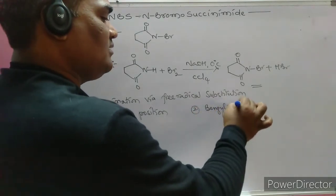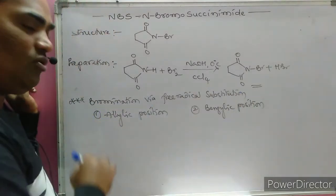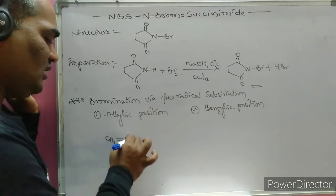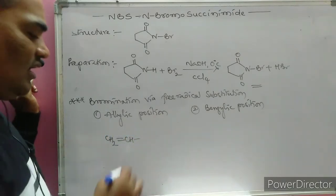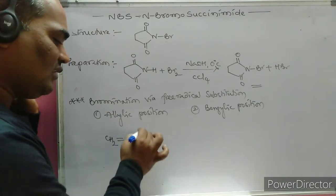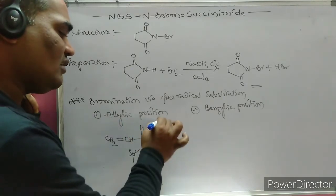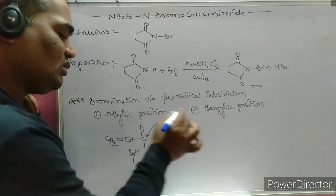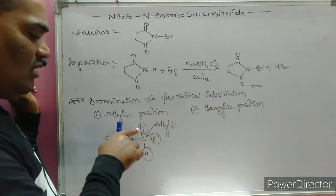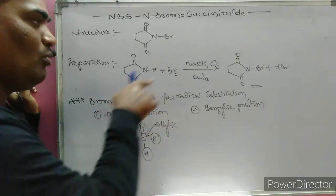How to identify the allylic position: if we have CH2 double bond CH (the sp2 carbon atom) further linked with another sp3 carbon atom, that position is called the allylic position, and those hydrogens bonded to that sp3 carbon are called allylic hydrogens. These hydrogens are successfully replaced by bromine using the NBS reagent.